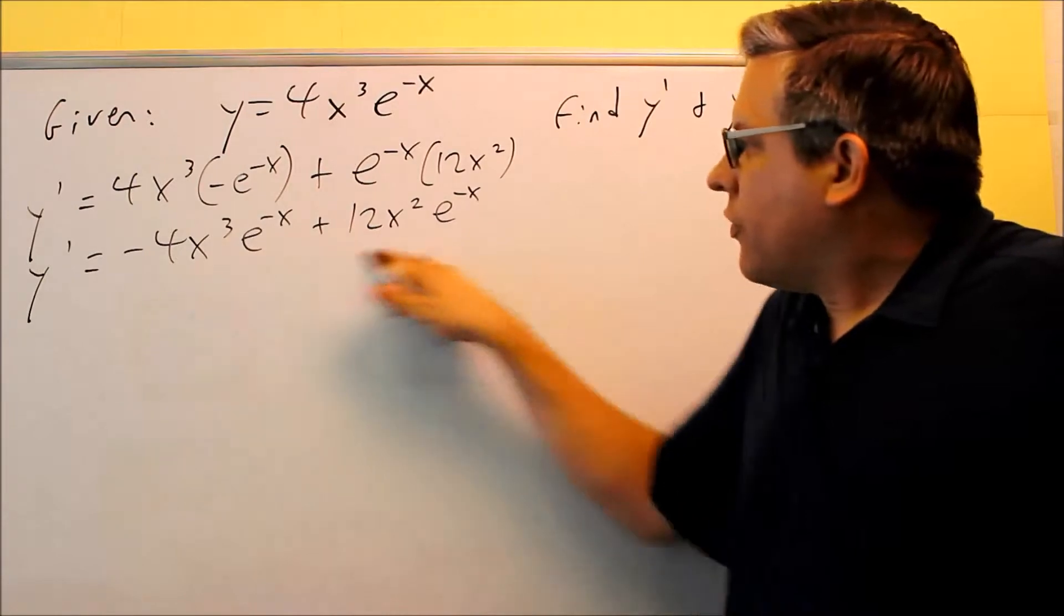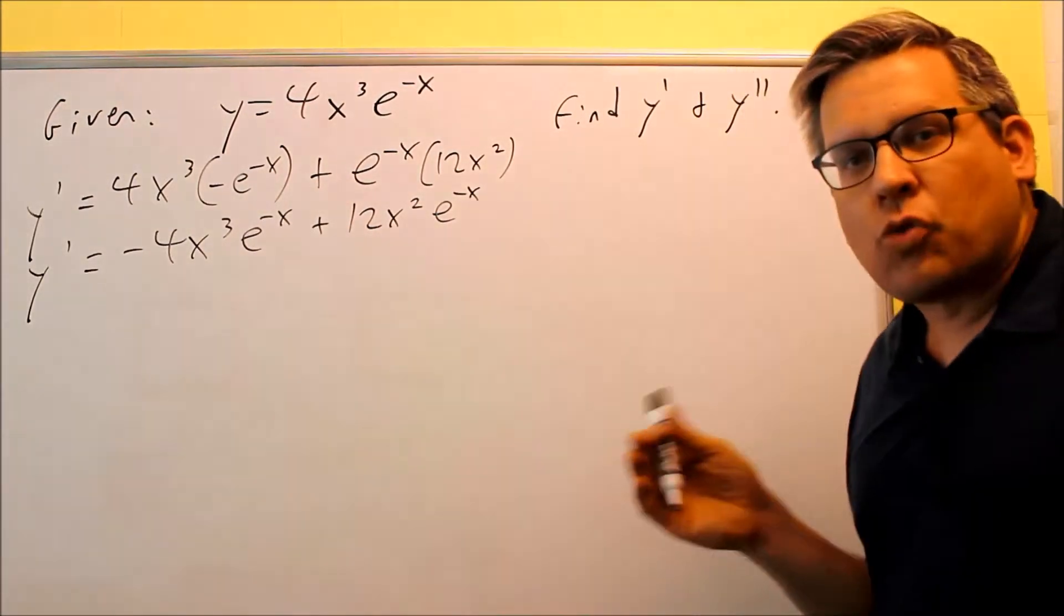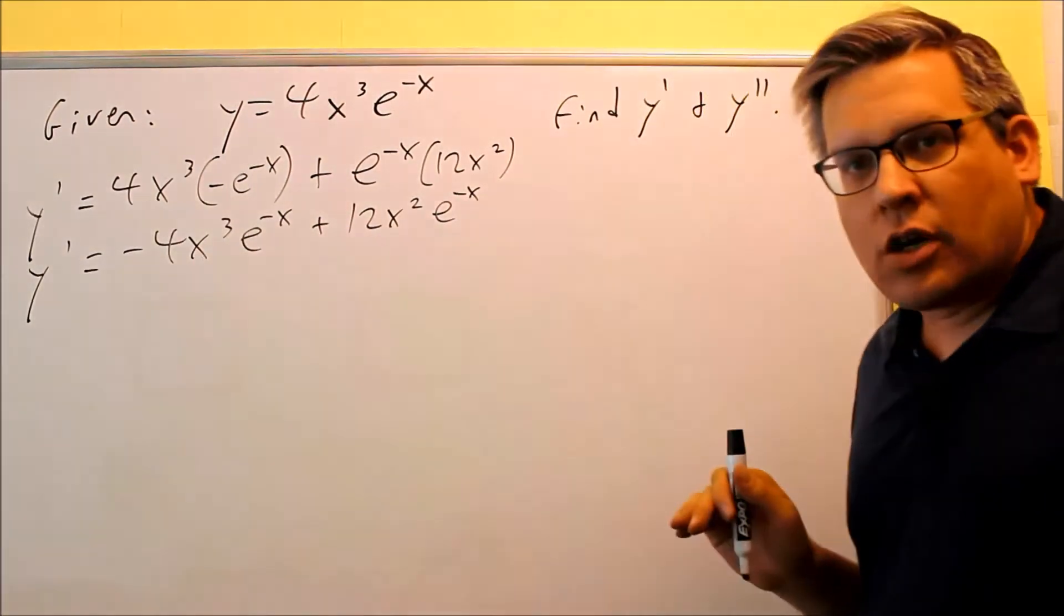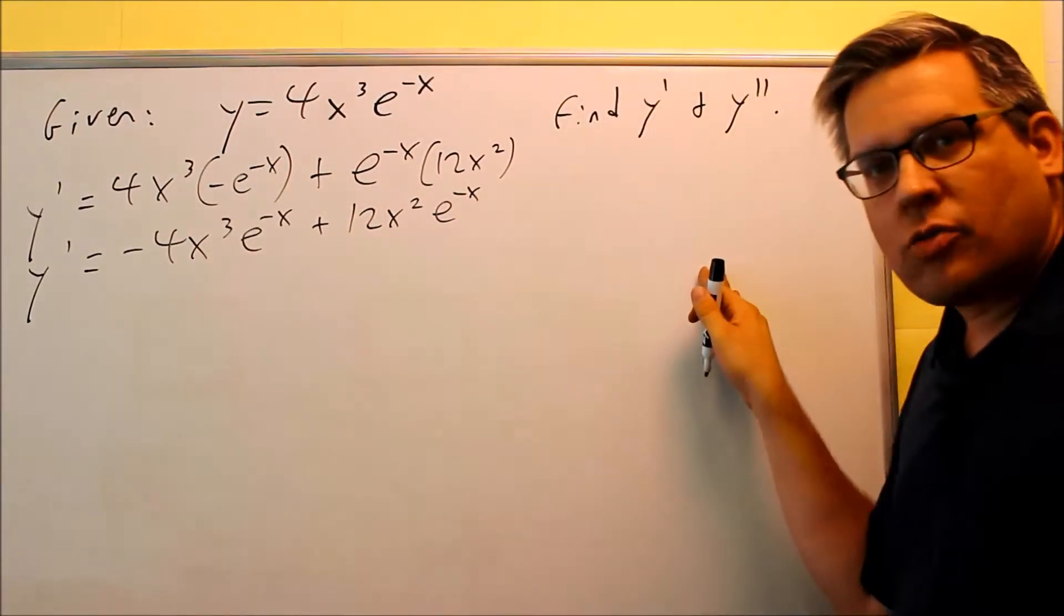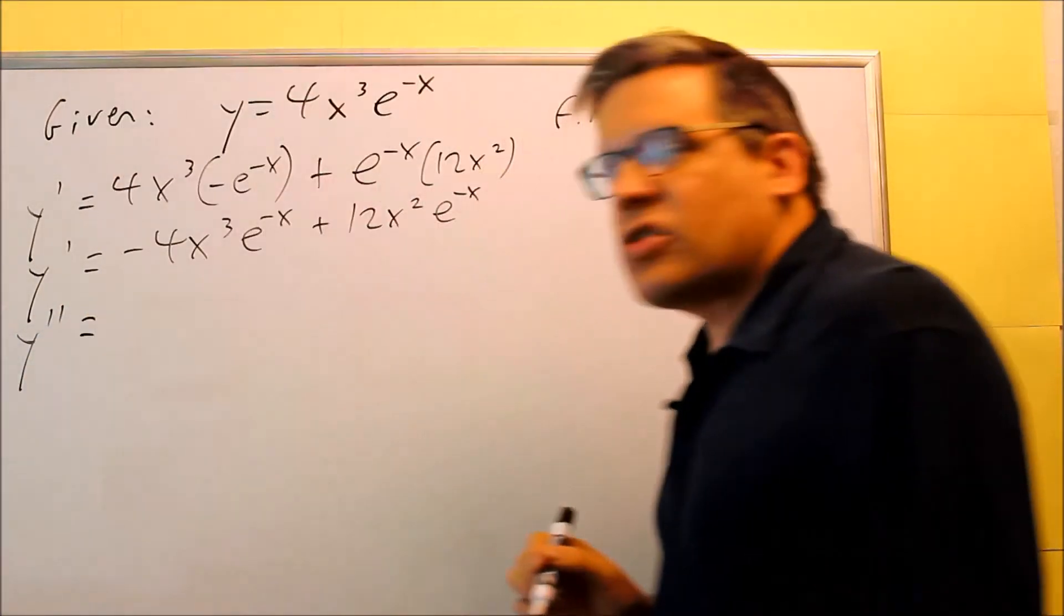Now notice, if we have to take the derivative of this one to get the second derivative, we have to actually do product rule twice. One for the first part, and one for the second part. So we're actually going to end up with four terms here when we're done. Let's do that. Jump into the second derivative.